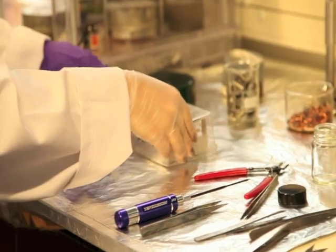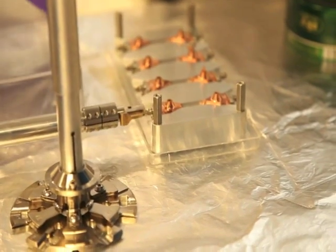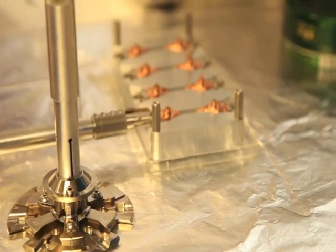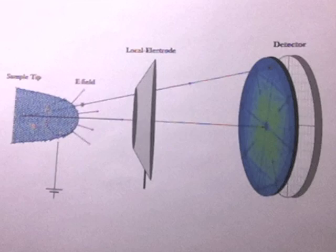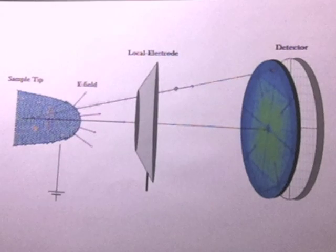The tip is then placed in the atom probe. Atom probe tomography is a destructive technique that allows us to see atom by atom what is in our sample. Through the application of electric pulses, atoms are ripped off the surface and strike a detector.